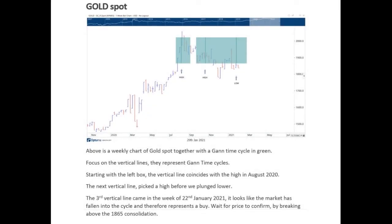Hi, Paul from GAN Exchange. Today we're having a look at the gold price. On screen is a weekly chart of the gold price, and what you can see are Gann cycles. We've just had a Gann cycle that came in towards the end of January, and we certainly corrected into it, and so far it looks as though it's going to be some sort of a low.